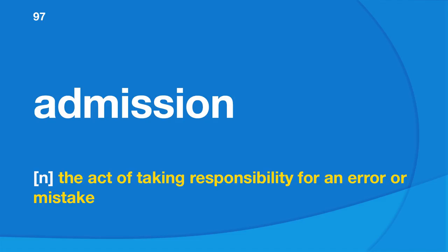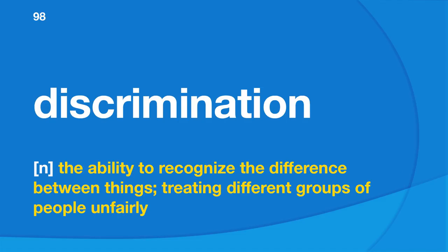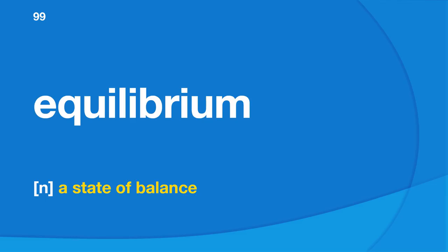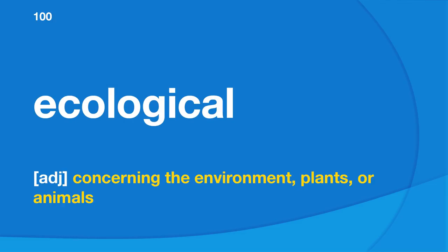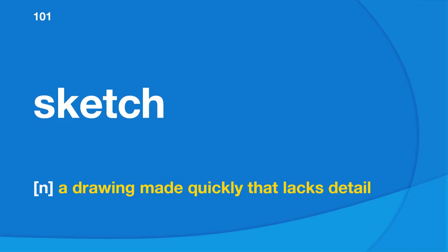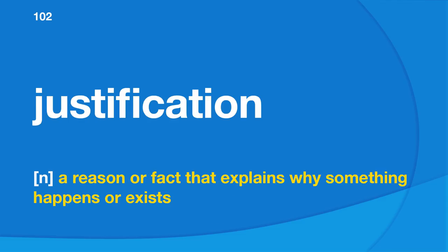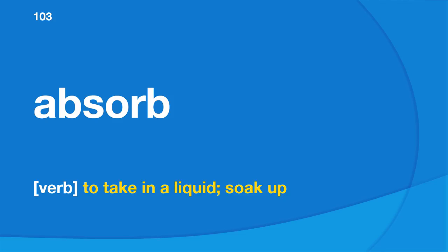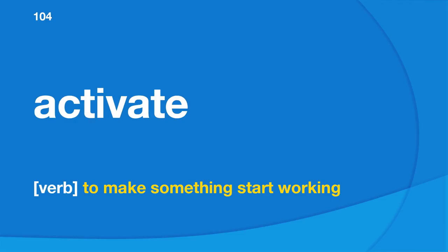Admission: the act of taking responsibility for an error or mistake. Discrimination: the ability to recognize the difference between things; treating different groups of people unfairly. Equilibrium: a state of balance. Ecological: concerning the environment, plants, or animals. Sketch: a drawing made quickly that lacks detail. Justification: a reason or fact that explains why something happens or exists. Absorb: to take in a liquid, soak up. Activate: to make something start working.